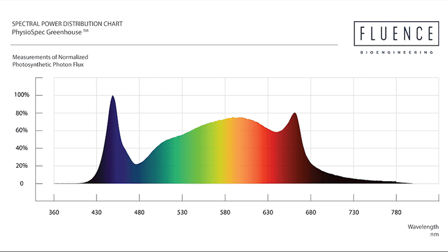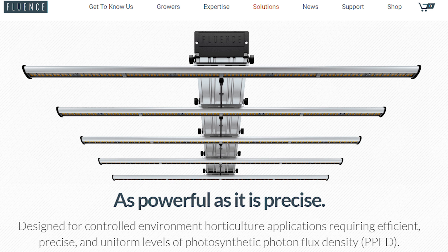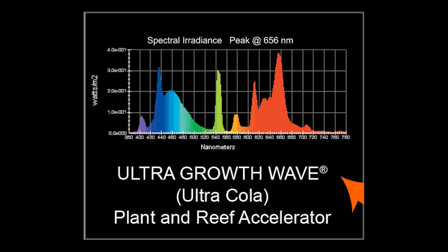Another example is the spectrum chart for the Physio Spec Greenhouse LED fixture from a company called Fluids. This is a very solid light for growing plants. Before you rush to Google to grab one, know that this is a greenhouse fixture — you can probably use it for planted tanks, but it's what we common folks call overkill. You'd have to do some major adjusting like hanging it high over your tank, and it's not cheap either.